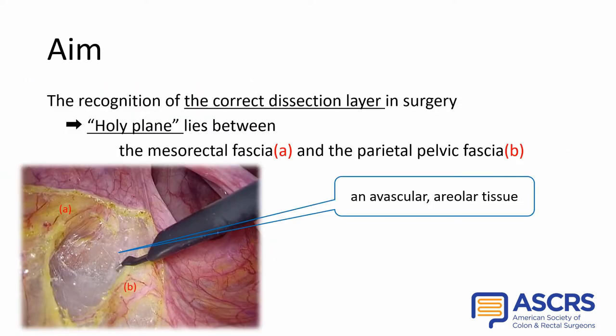In our study, we focused on the recognition of the correct dissection layer in surgery. In TME, that layer is the holy plane, which lies between the mesorectal fascia and the parietal pelvic fascia. In the holy plane, there is an avascular areolar tissue, and identification of areolar tissue during surgery could be helpful for surgeons to perform TME safely and accurately.